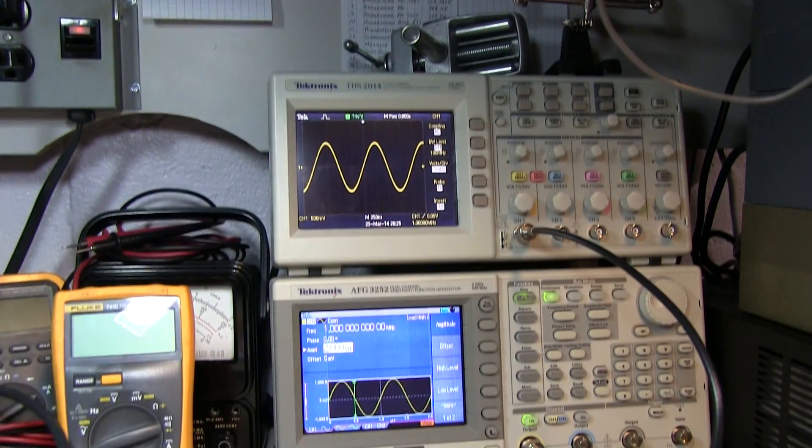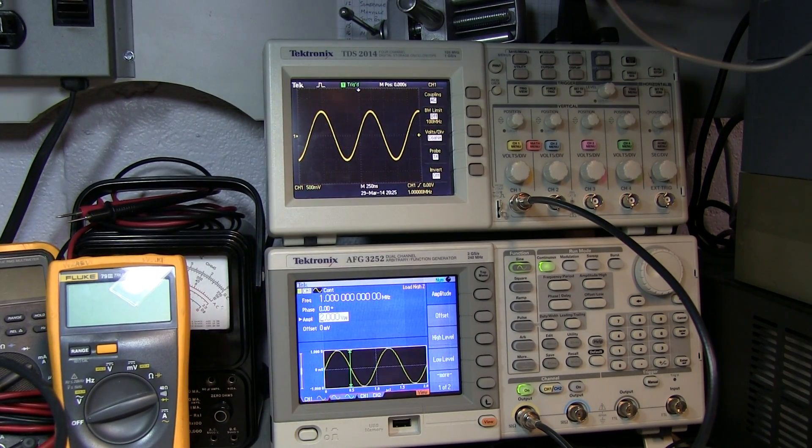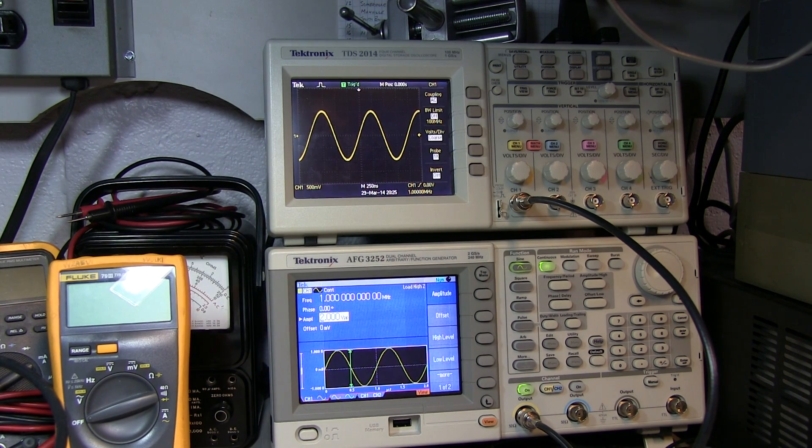But that is the most common reason why the function generator output amplitude may not match what you set it to. You just have to be careful of the load impedance, both what the generator is expecting and what your load is presenting, and make sure they match. And then the amplitude should match as well. Thanks again for watching, and see you later.